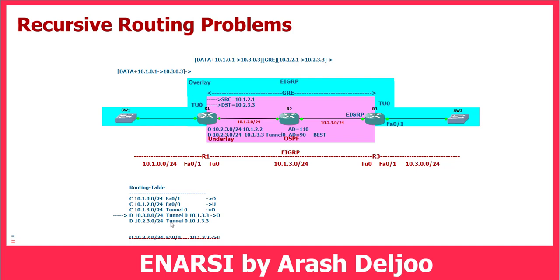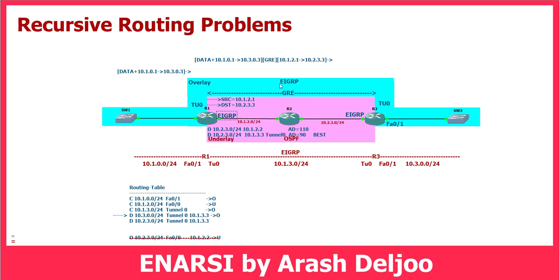When you want to use recursive routing this way, you cannot do it. Previously, when we had only OSPF, we could forward it over FastEthernet0/0. When this problem occurs, the Tunnel0 interface will automatically shut down because we cannot forward traffic to 10.2.3.3. The tunnel zero goes to a down state. You should ensure that you do not enable the same IGP of the overlay on the underlay interfaces. If you configure the overlay IGP on the underlay, you will receive this problem.